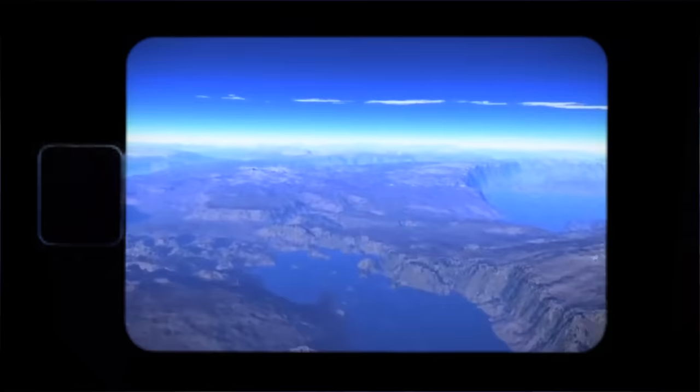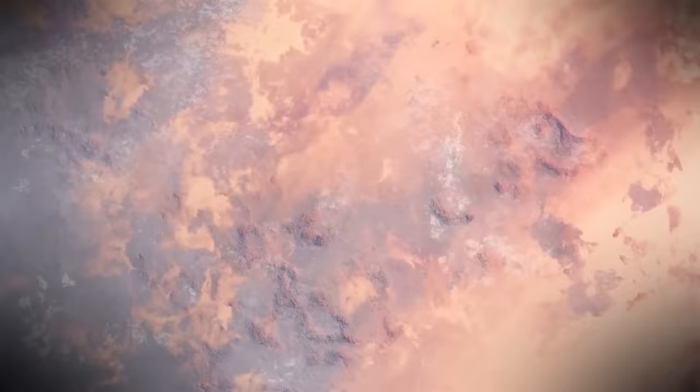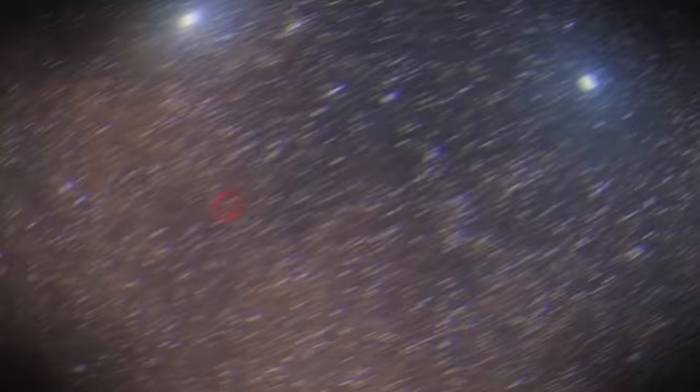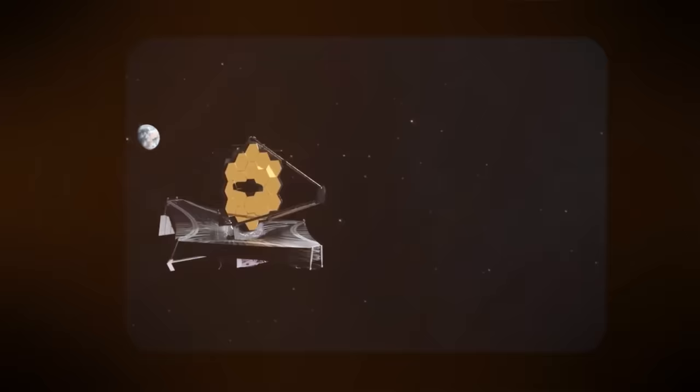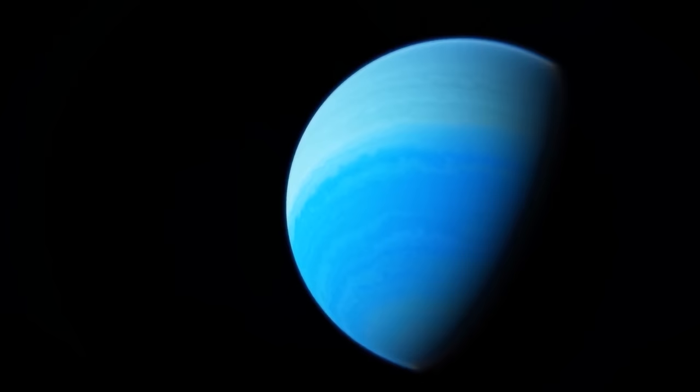The significance of this unveiling lies not only in the visual spectacle, but also in the wealth of scientific data embedded in the image. By meticulously analyzing the reflected light from Proxima b, astronomers can discern crucial information about its atmospheric composition and surface characteristics. The details captured by the JWST offer a glimpse into the potential topography of Proxima b, with scientists speculating about the existence of oceans, continents, and perhaps even weather systems.